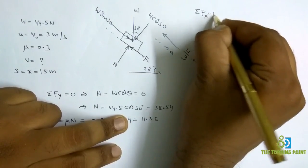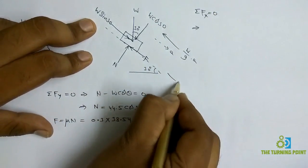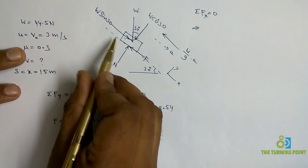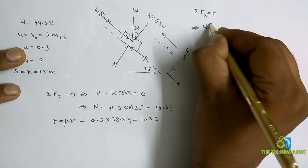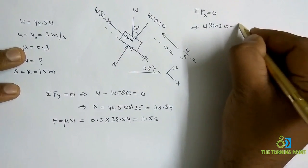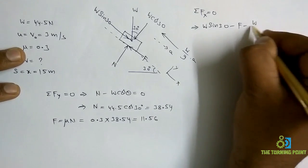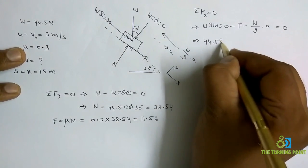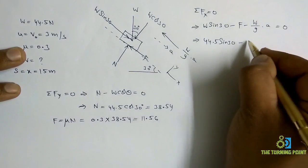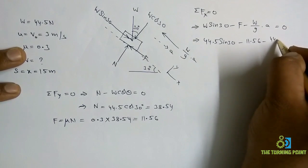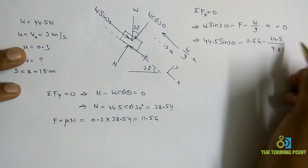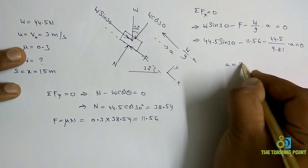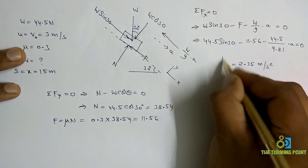Applying σFx = 0 along the x direction — parallel to the plane is x, perpendicular to the plane is y. Forces parallel to the plane: w sin 30° along positive x, minus frictional force F, minus (w/g) × a = 0. Substituting: 44.5 × sin 30° − 11.56 − (44.5 / 9.81) × a = 0. Simplifying, acceleration a = 2.35 m/s².